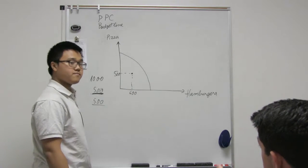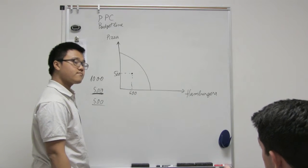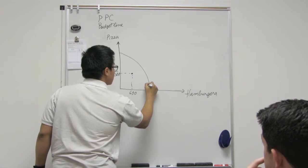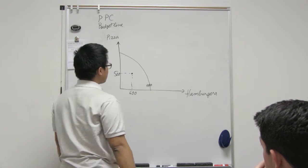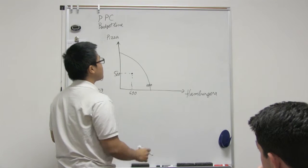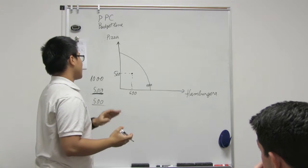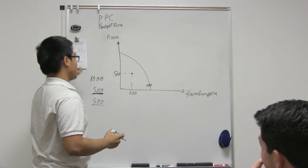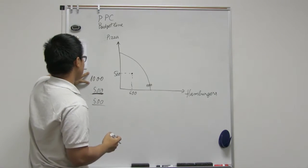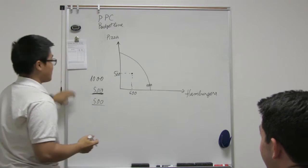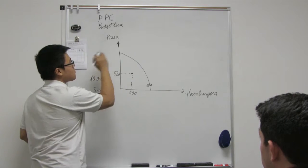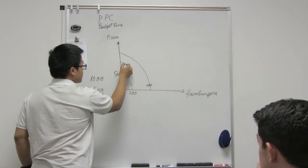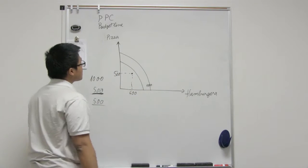So when you're on that curve, you're using all of your employees and all of your resources. But the number of workers is still 1,000. Now, what if there's a disaster that killed half of the citizens of the city, half of that 1,000? There'll be 500 left. Then what will happen to the graph?